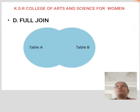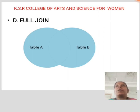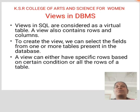Full Join: Full Join creates the result set by combining the results of both Left Join and Right Join. The result set will contain all the rows from both tables. For rows for which there is no matching, the result set will contain null values.